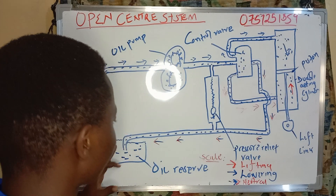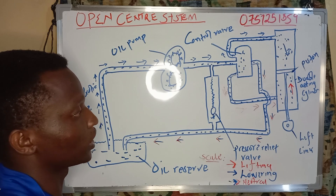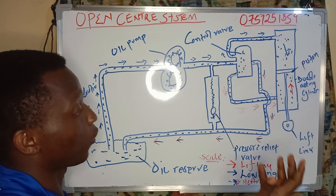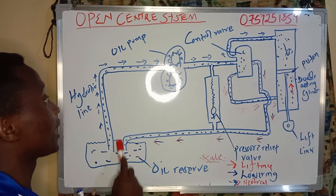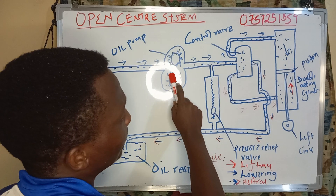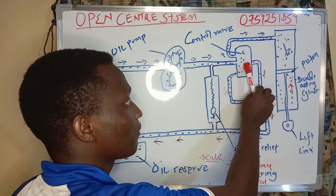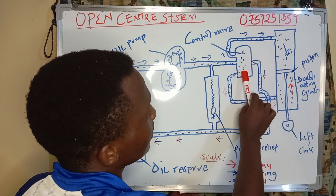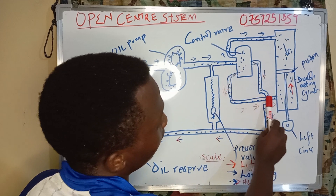Now let me assume my tractor is lifting a weight. The oil will just be taken from the reservoir and will be automatically pumped. After being pumped it will get to the control valve. After the control valve, it will go directly into this channel.